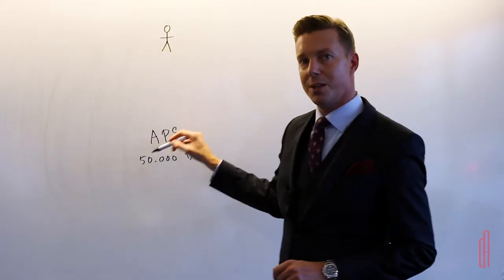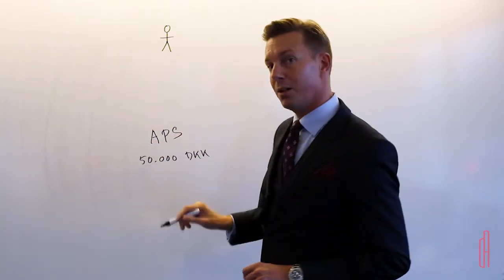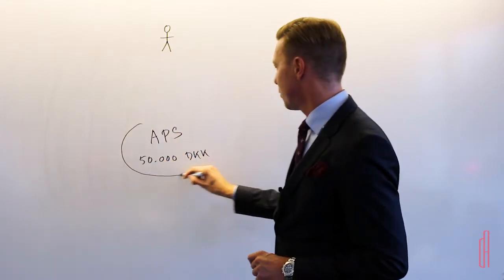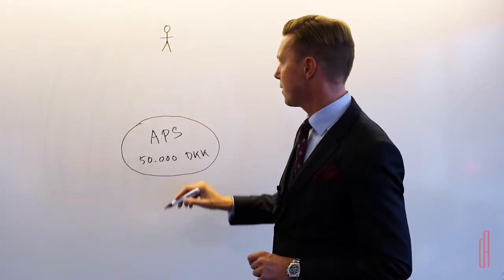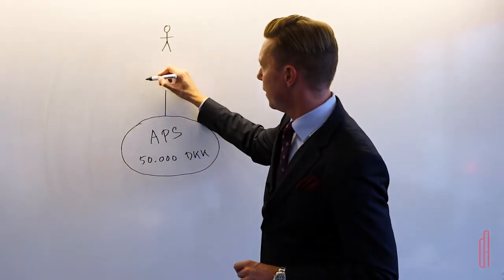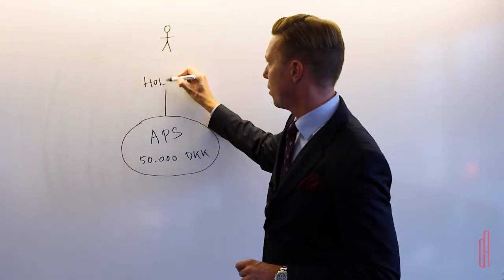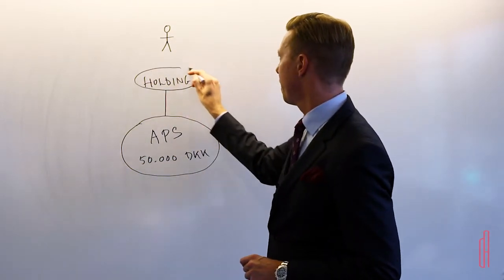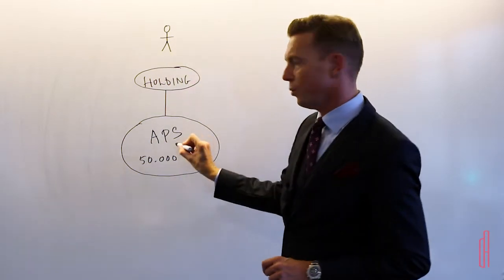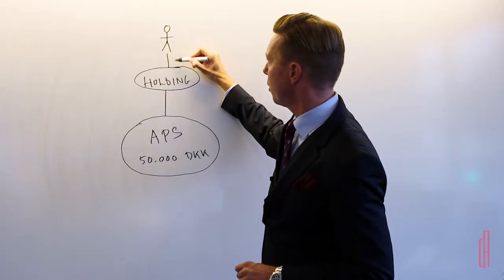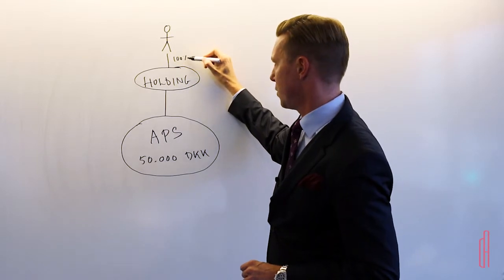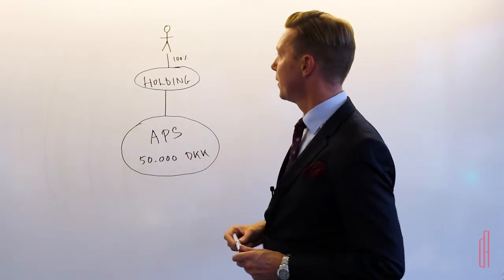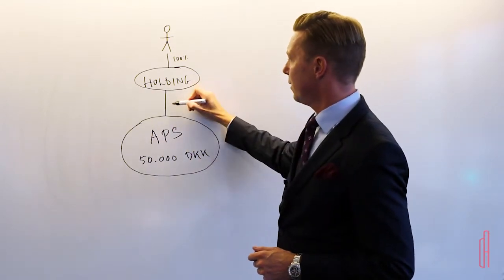But instead of owning all the shares himself, he actually puts in another company between him and the company. So we'll do like this here, we'll draw a circle here. So this is the APS, and in between here he actually puts another company which we call a holding company. I'll make a circle here. So instead of owning this company, he actually owns the holding company here. He may own 100% of the shares. It could be a different percentage of ownership, but in this example we'll say 100%. And the holding company then owns 100% of the APS.